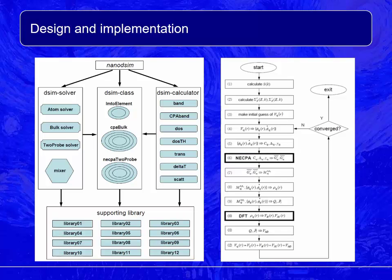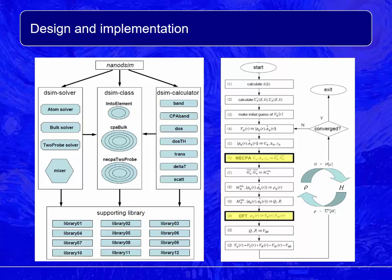The flowchart of the self-consistent calculation has 12 steps. Step 6 and step 10 are the most important ones. Step 6 is the NEGF-CPA step where the density matrix is calculated for a given Hamiltonian. Step 10 is the DFT step where the potential is calculated for a given charge density. The coupling of NEGF-CPA and DFT is the core of NanoDCIM.